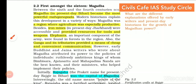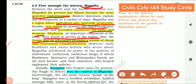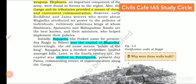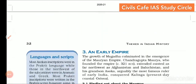The first among the 16 was Magadha, the most important Mahajanapada. It became the most powerful due to certain factors: agriculture was especially productive because of the fertile land of the Ganga; closeness to iron mines (think present-day Jharkhand) provided resources for tools and weapons; elephants, an important component of the army, were found in forests in the region; and the Ganga and its tributaries provided cheap and convenient communication. Initially Rajagaha (Rajgir) was the capital of Magadha, and later the capital was shifted to Pataliputra.